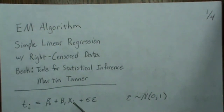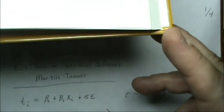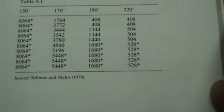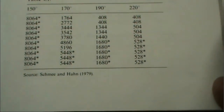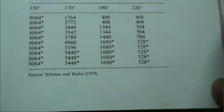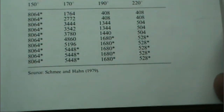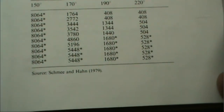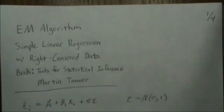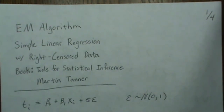The example they give is motorette data for 40 different motorettes, observing their failure times. They put them at four different temperatures with 10 motorettes per temperature, running until failure. The asterisks in the data indicate censored times — cases where the failure was not observed — and this is what we're going to model with the EM algorithm.